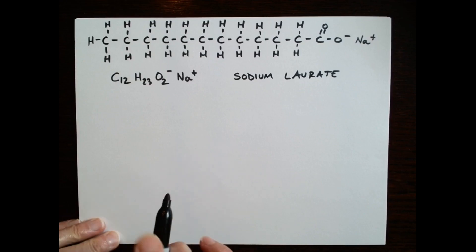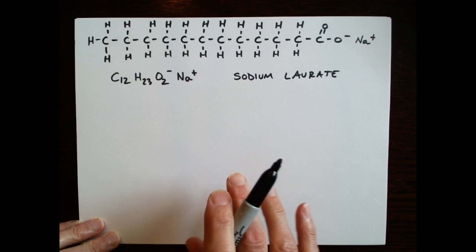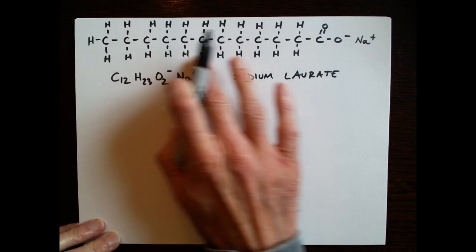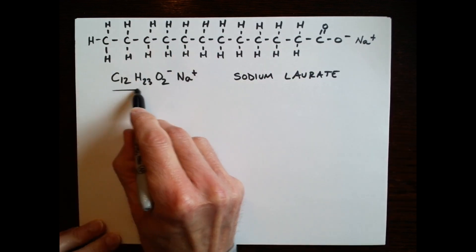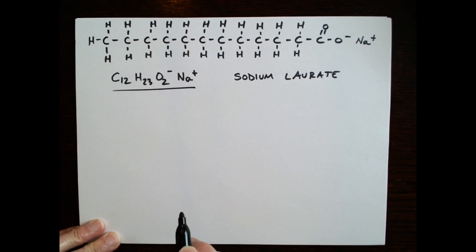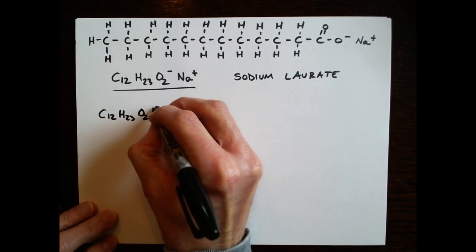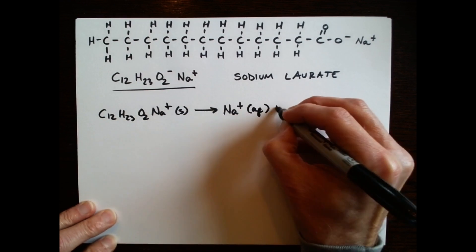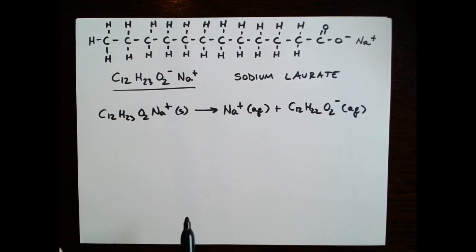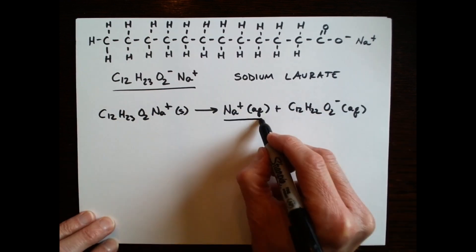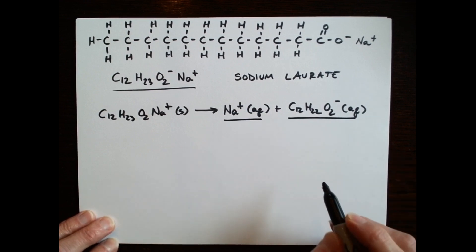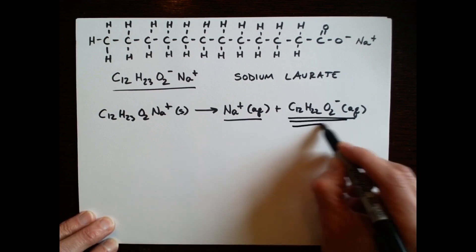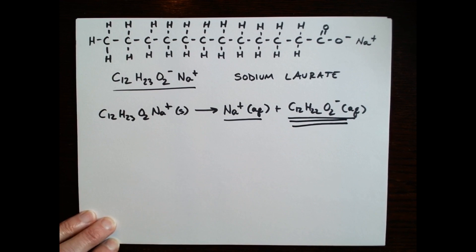Dial soap is made in part of sodium laurate. The structure of sodium laurate is shown here, but we can also write its chemical formula like this. Sodium laurate dissolves easily in water. When it does so, it dissociates into sodium ions and laurate ions. It's these dissolved laurate ions that allow for the sudsing action.